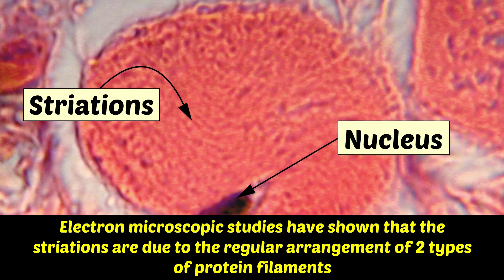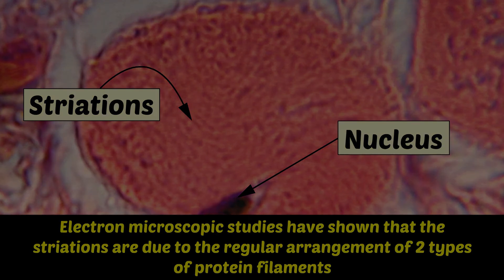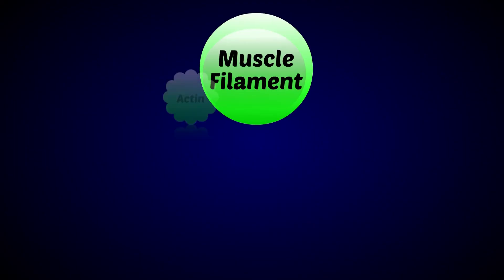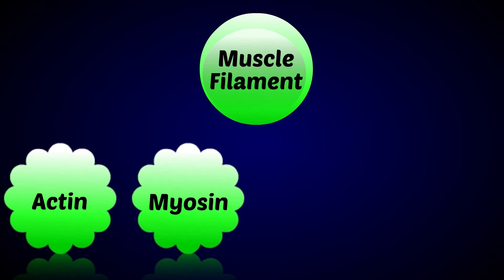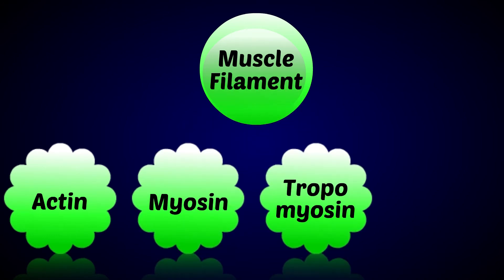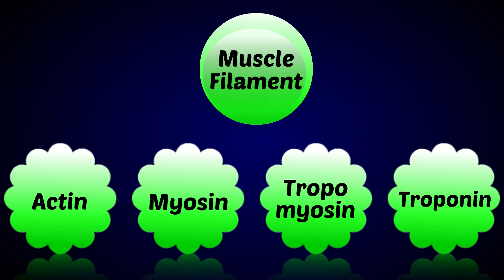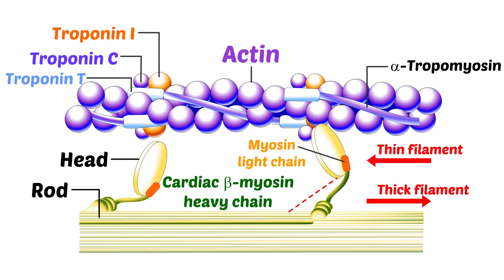Electron microscopic studies have shown that these striations are due to the regular arrangement of two types of protein filaments. Muscle filaments consist of actin, myosin, tropomyosin, and troponin. The A band contains a set of thick filaments formed of the contractile protein myosin.